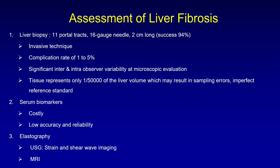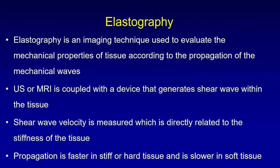Serum biomarkers are expensive and have low accuracy and reliability. Elastography — ultrasound strain and shear wave — has been around for a long time now, and MR elastography is the new kid on the block. Elastography is an imaging technique used to evaluate the mechanical properties of tissues according to the propagation of mechanical waves. Ultrasound or MRI may be coupled with a device that generates shear waves within the tissue, and the shear wave velocity is directly related to the stiffness of the tissue.